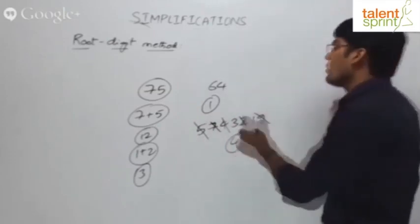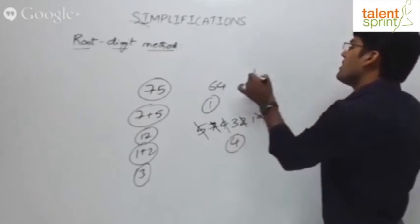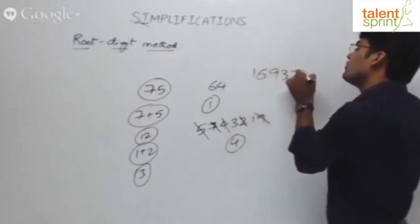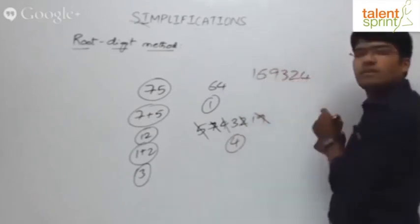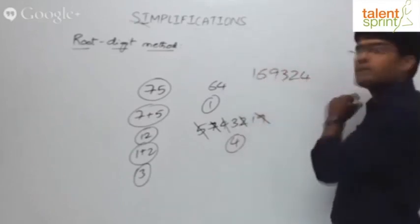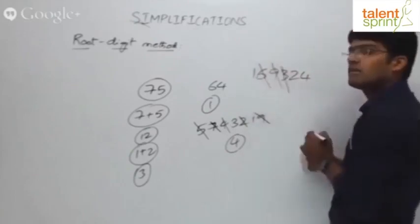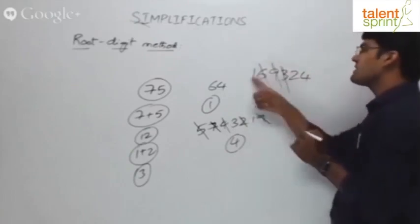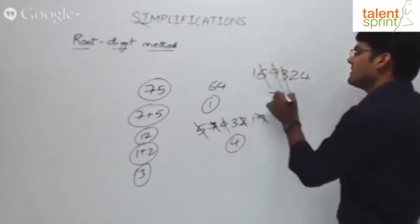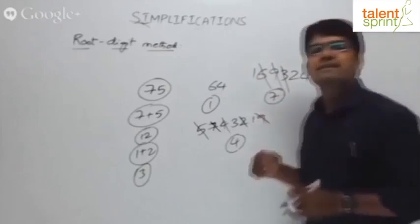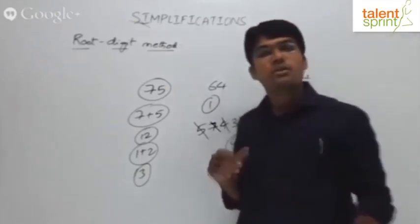For example, what is the root-digit of 1, 6, 9, 3, 2, 4? Don't add all of them. 6 and 3 make 9 — gone. 9 is gone. Remaining: 2 plus 4 is 6, plus 1 is 7. The root-digit is 7. This is basically what is meant by root-digit.